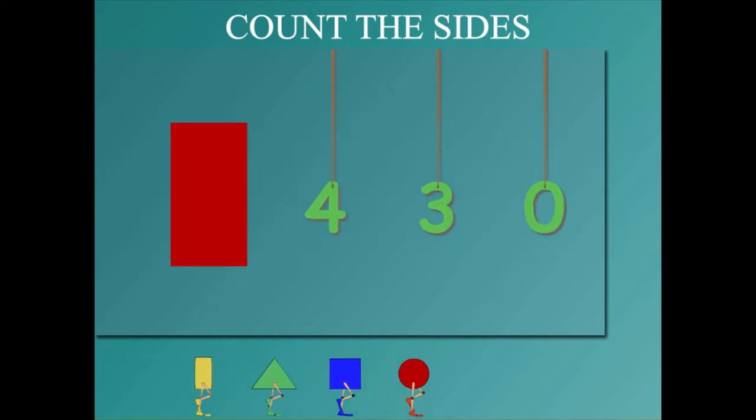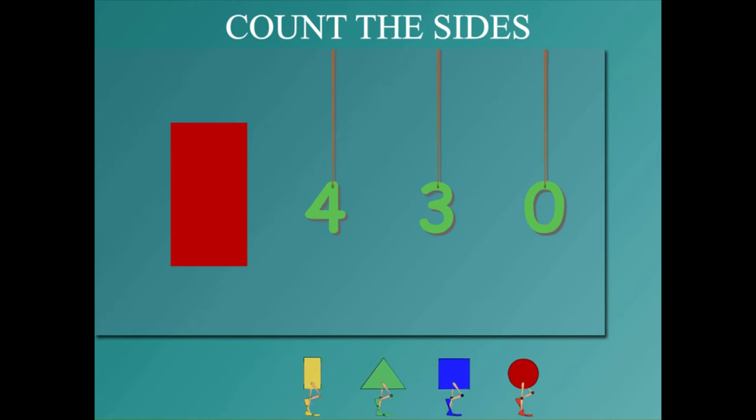Here is a rectangle. How many sides? 4 or 3 or 0. Count quickly. It has 4 sides. Well, well.